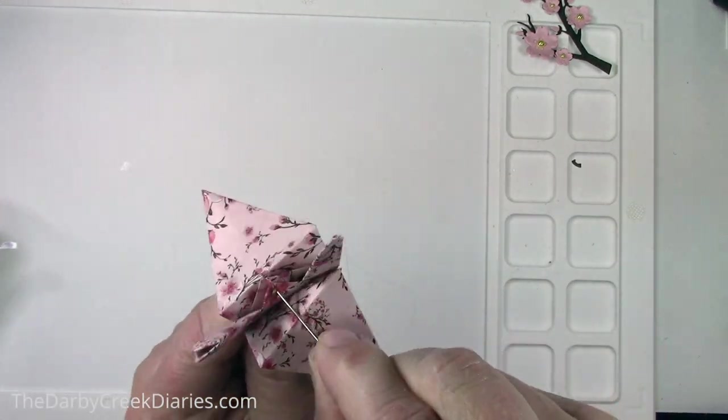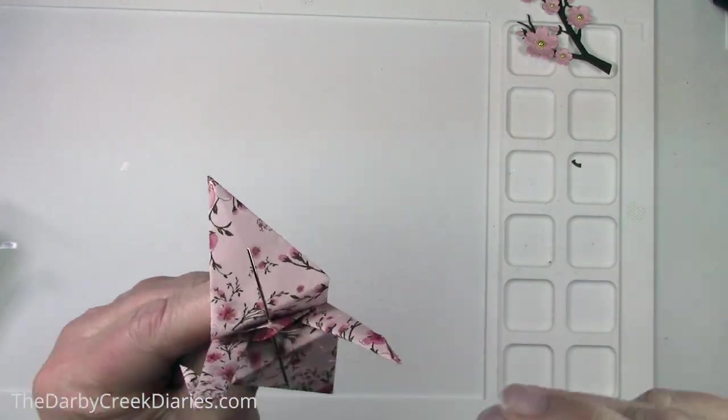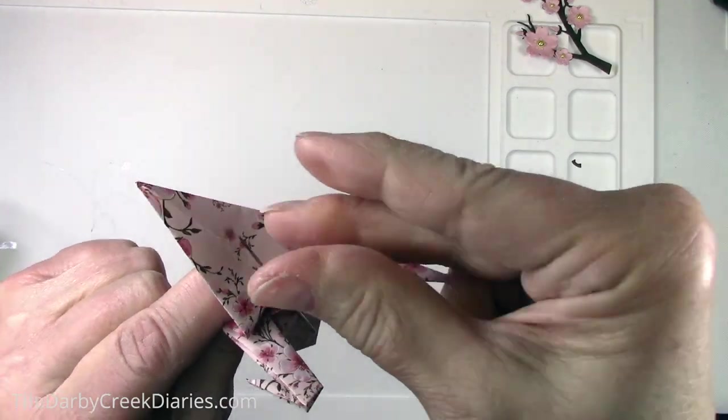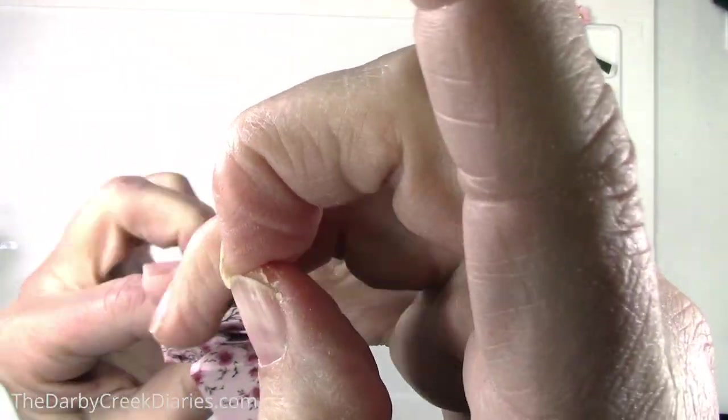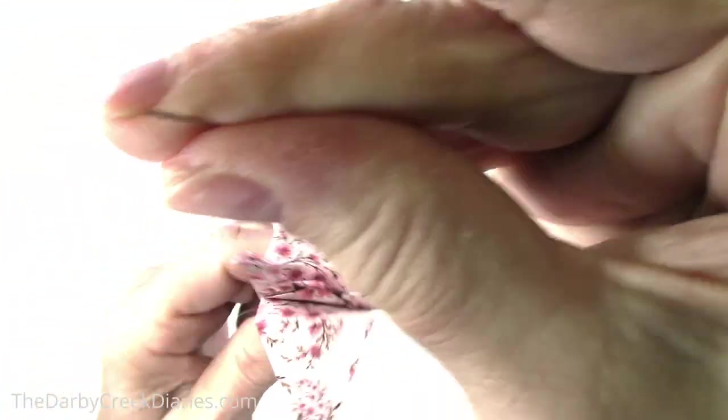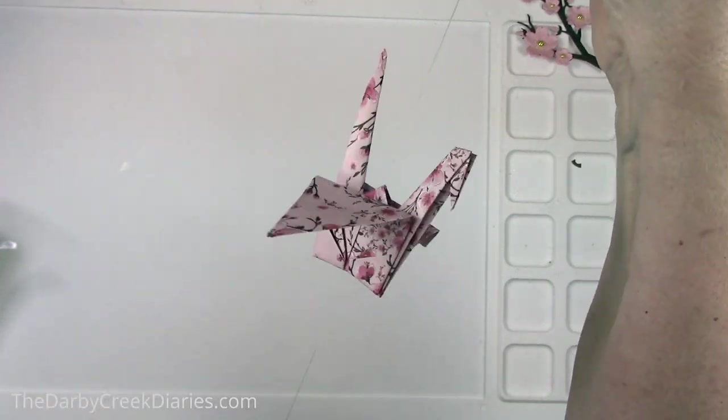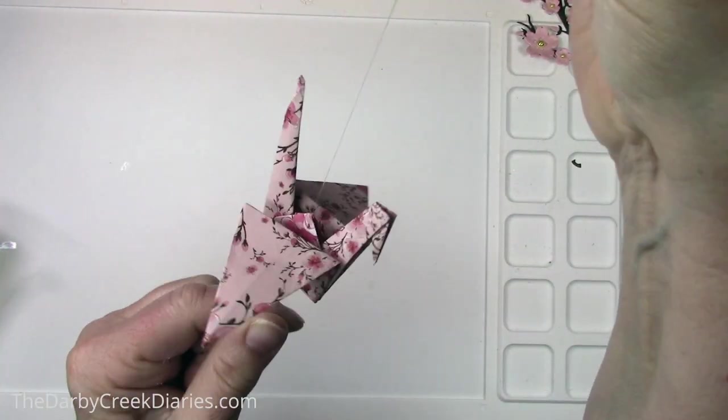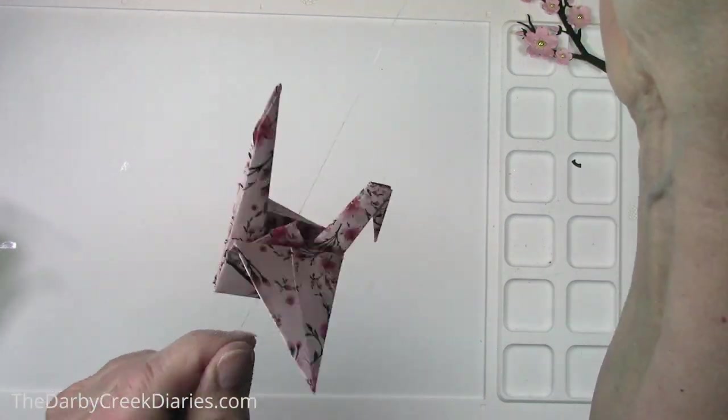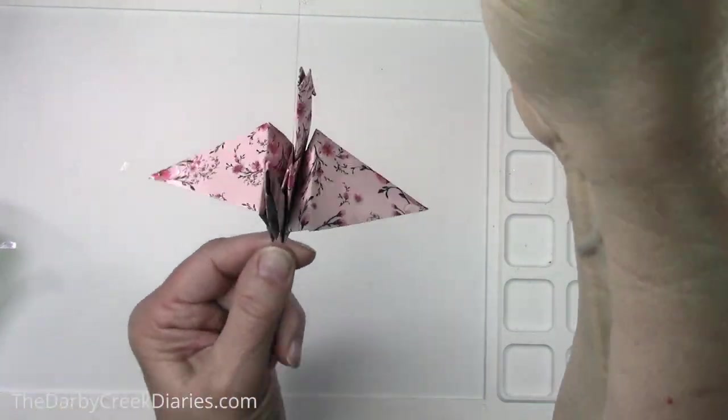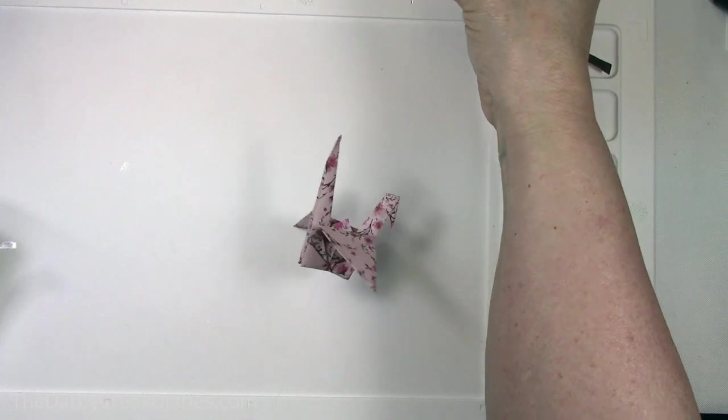And then you run a stitch through the side and you're going to loop your thread through over the needle and pull it up and that keeps it so it'll stay in the same place. Believe me I did this hundreds of times. And now we have our crane strung.